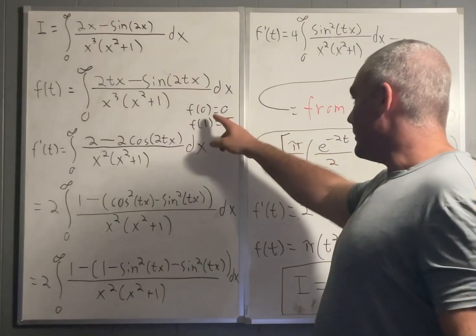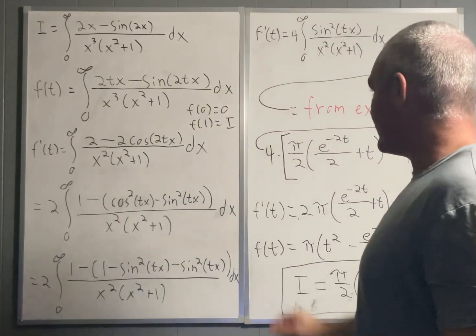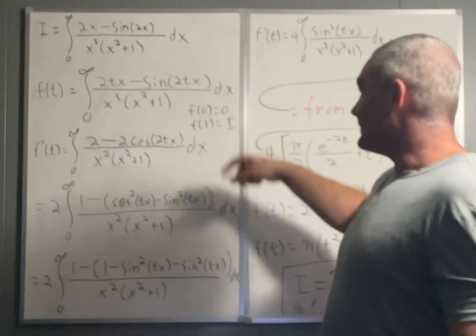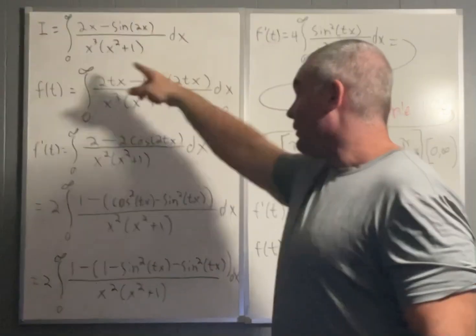Also, we're going to note that our function of t evaluated at 0 will be 0. That's pretty clear to see. And then if you evaluate it at 1, we will get back our original integral.